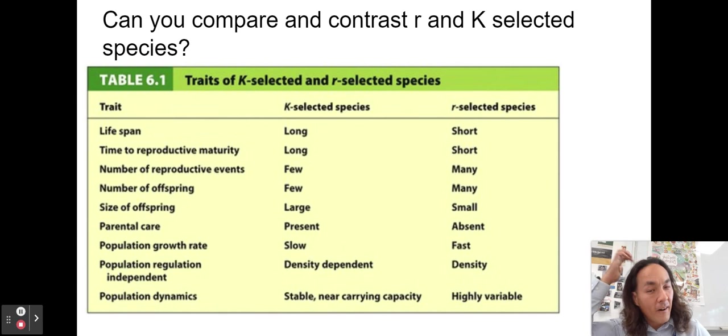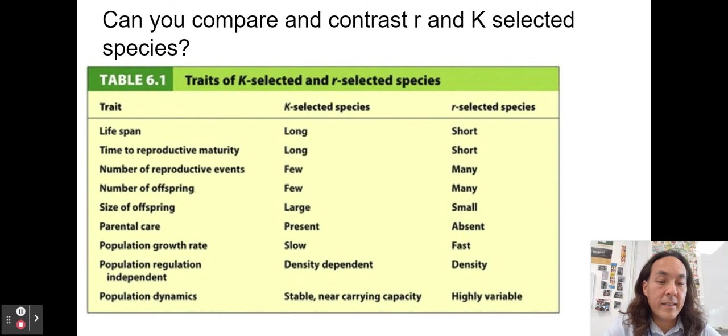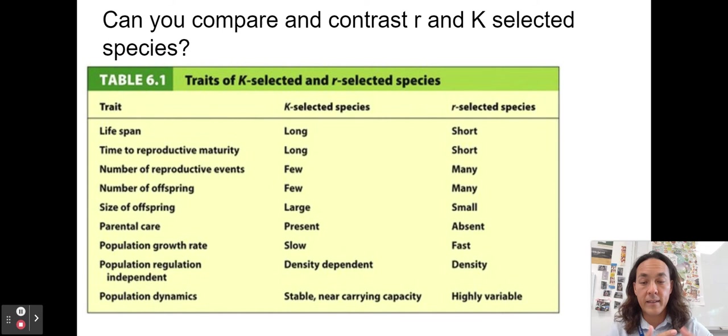Compare and contrast R and K-selected species. Humans and elephants are K-selected: we live a long time, it takes a while to reach reproductive maturity, we have few babies and spend a lot of time caring for them. R-selected species are the opposite — like frogs with tadpoles that don't provide parental care and just have many babies hoping they make it. Neither strategy is better; they're different ways to reach carrying capacity.